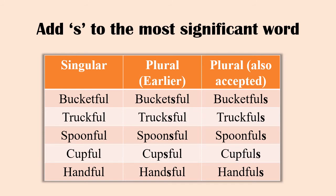For some compound words, 's' is added to the most significant word. Earlier it was added to the end of the first word; now 's' is also added at the end of the second word. Both forms of plural are acceptable, but we have to be consistent in our choice. Examples: bucket full → buckets full or bucket fulls; truck full → trucks full or truck fulls; spoonful → spoons full or spoonfuls; cup full → cups full or cup fulls; handful → hands full or handfuls.